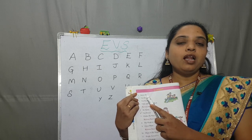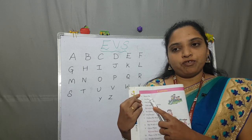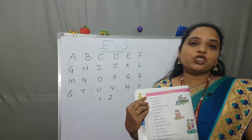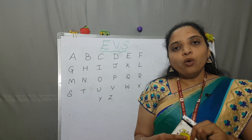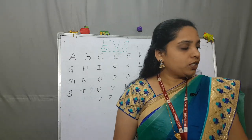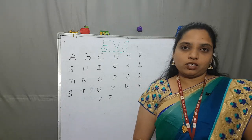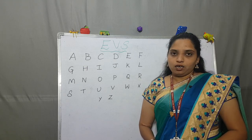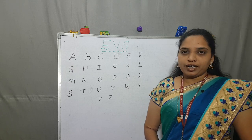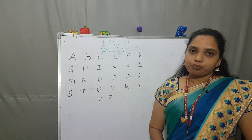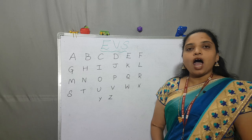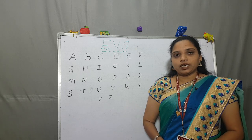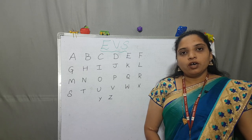We will introduce ourselves to others. Here is a small activity which I will show you — how we introduce ourselves to others. Previously you have learned about A to Z. Here is a small activity about the name — finding out letters in the name.